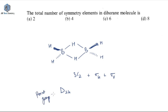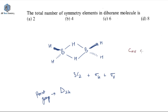If you don't know how to find out the point group, I have made a dedicated video for that — I'll attach it in the I-button over here. Now let me give you some information: if you have a point group like CNV or CNH, the total number of symmetry elements is given by the formula 2N.